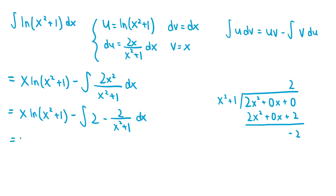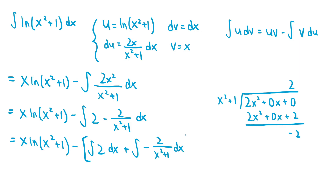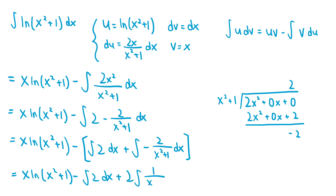Since the integral involves a sum, we can split this into two separate integrals: the integral of 2 dx plus the integral of negative 2 over (x² + 1) dx. Notice how we're subtracting the entire integral, which is why we need the parentheses. Simplifying by distributing the negative sign and taking out a constant multiple, this expression becomes x·ln(x² + 1) minus the integral of 2 dx plus 2 times the integral of 1 over (x² + 1) dx, since the negatives cancel.